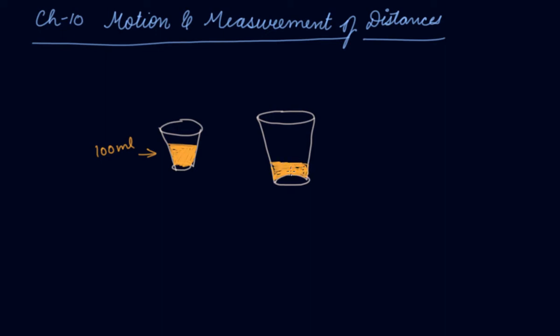...you will say that this glass has less juice, whereas this glass has more juice, right? But if I pour this glass into this big glass, the amount of juice remains the same - 100 ml. Right? So we need some units in order to measure the accurate volume of any material. So due to this, we require a measurement.